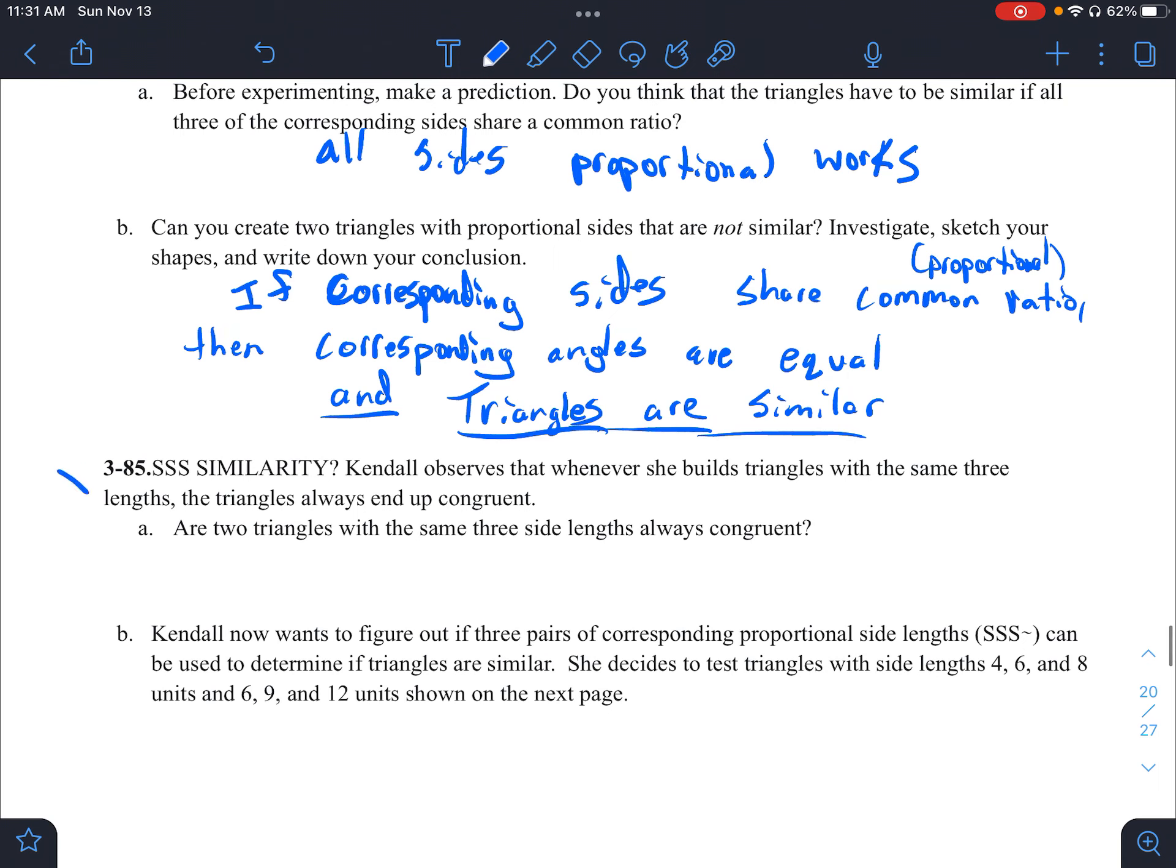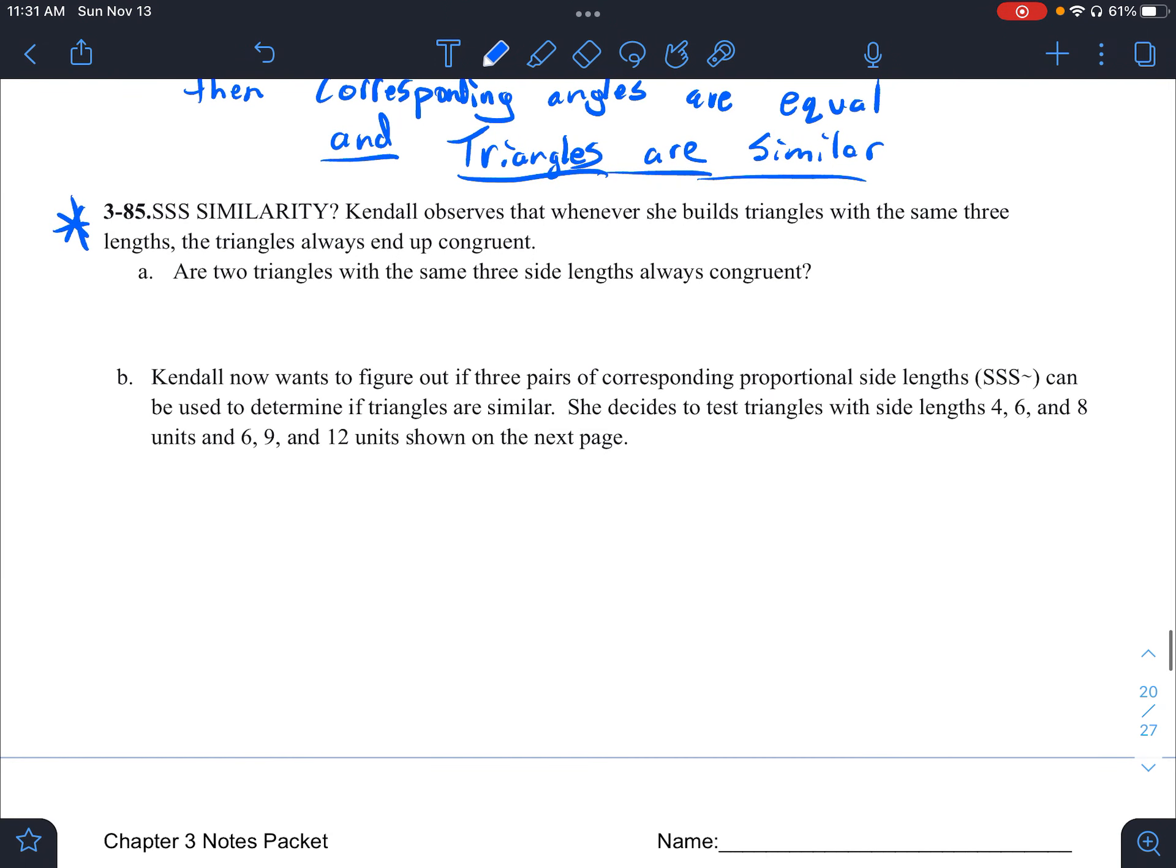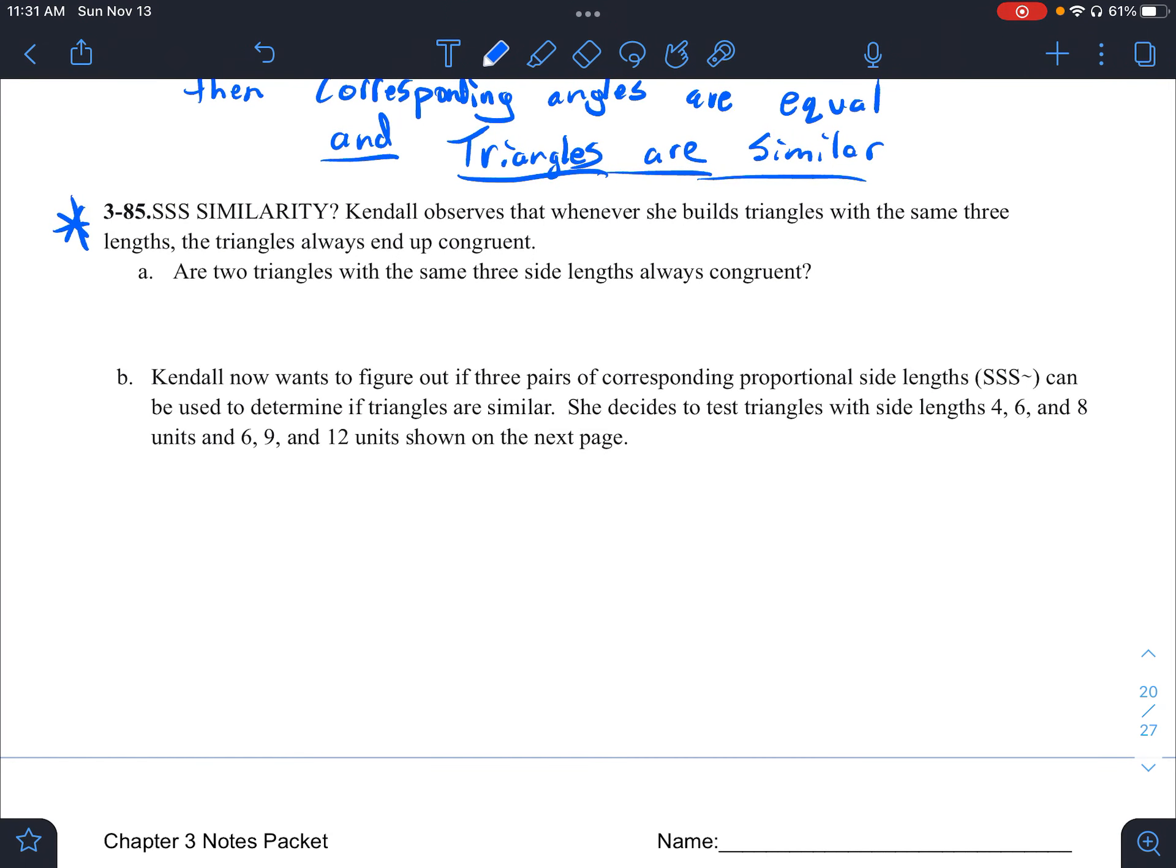So we're going to get a little bit of work with this. 85, this is like the main problem we have to be able to understand. So side side side similarity. It says, Kendall observes that whenever she builds triangles with the same three lengths, the triangles always end up congruent. So I'm going to say, pause the video here, try to work through these. This one might take you close to 10 minutes because you got a lot of parts here, A through F. But take some time, really try to work with these because 85 is like the main problem that you have to be able to understand by the end of today.